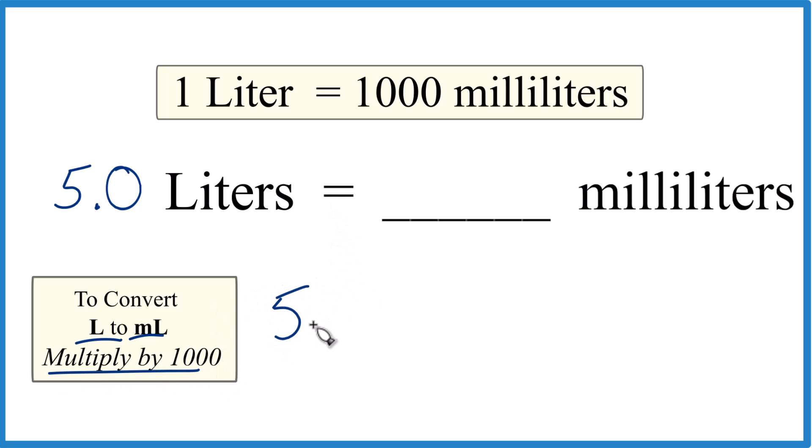Like this: 5.0 liters, we multiply that times 1,000. And that 1,000, that's 1,000 milliliters in 1 liter, so milliliters per liter.